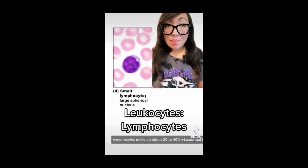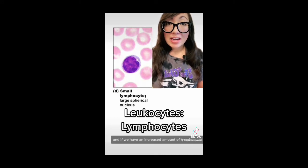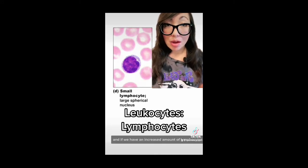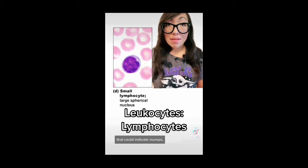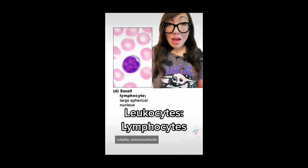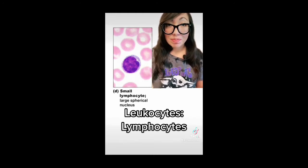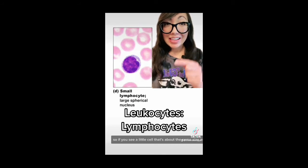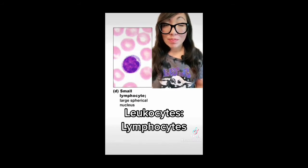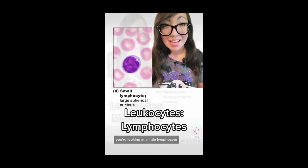Lymphocytes make up about 20 to 40 percent of a normal blood cell count. And if we have an increased amount of lymphocytes within the blood, that could indicate mumps, rubella, mononucleosis, and potentially some types of leukemia and chronic bacterial infections. So if you see a little cell that's about the same size as a red blood cell, you're looking at a little lymphocyte.